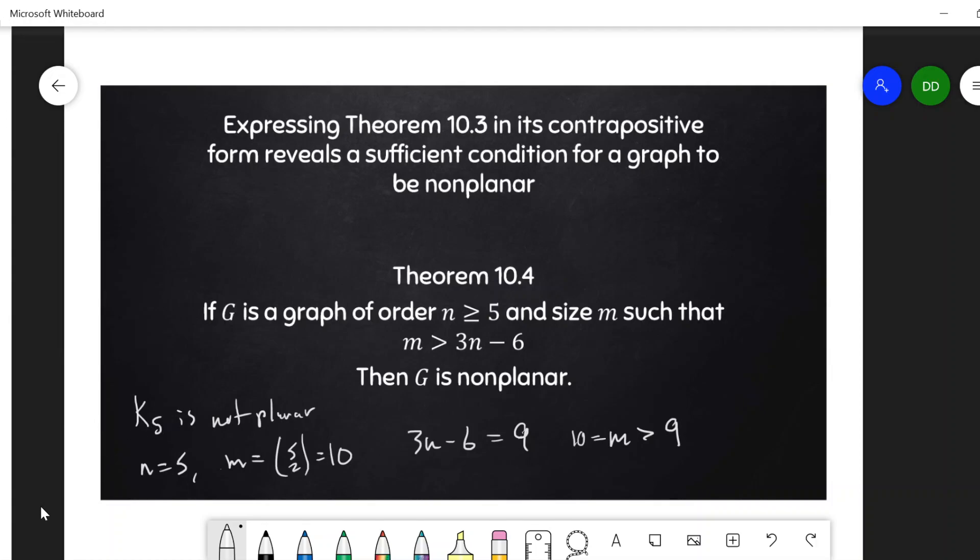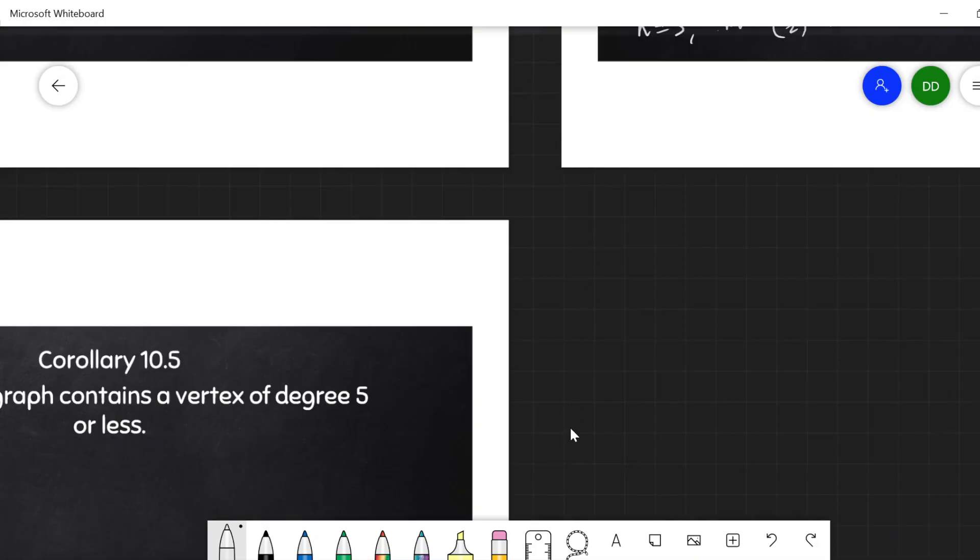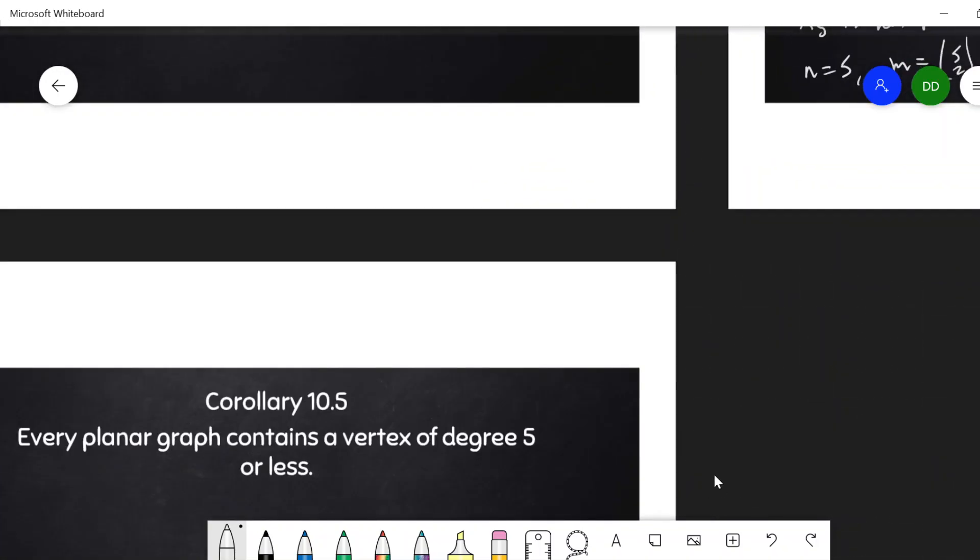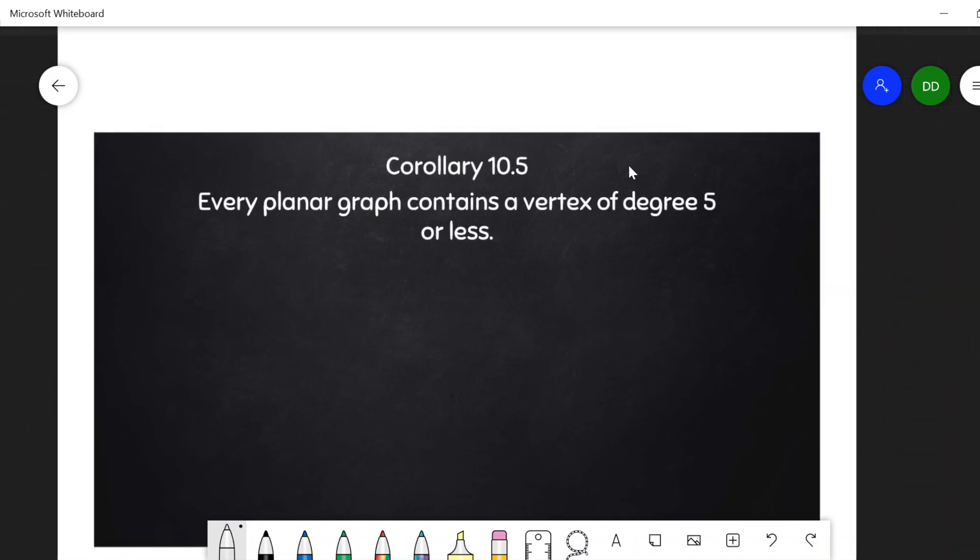So one last corollary here that I want to mention, and this is kind of useful and maybe somewhat surprising, is that every planar graph contains a vertex of degree 5 or less. That is, its minimum degree of g is at most 5 if g is planar. You have to have a vertex of degree 5 or less.